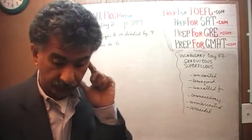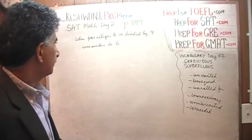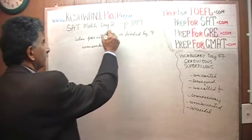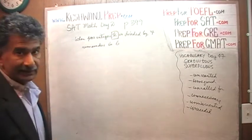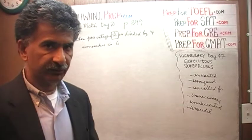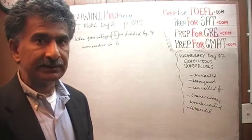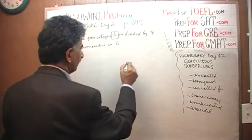Make sure you read the problem with me. The very first one says when a positive integer K is divided by 7, the remainder is 6. The very first thing we need to do here is to think of such a number so that when you divide it by 7, the remainder is 6.